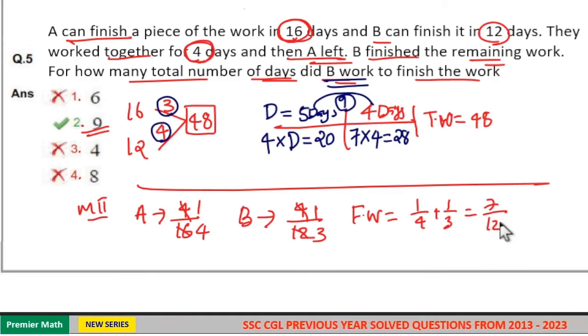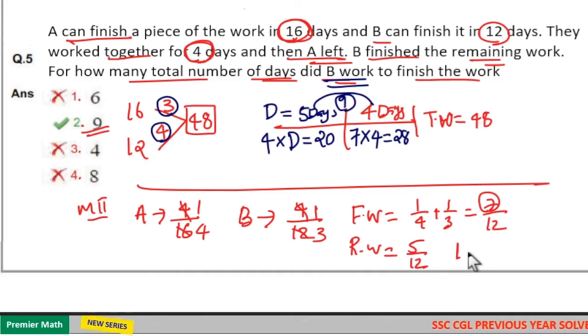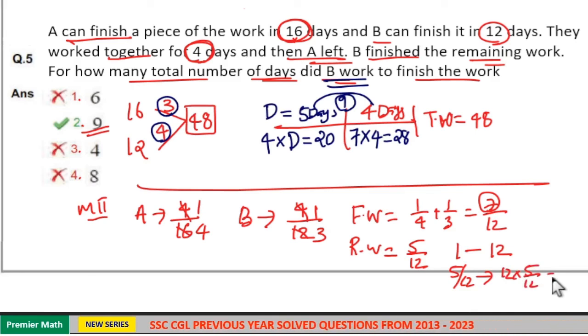That is out of this 12 unit work 7 units is finished. Remaining work equals 5 by 12. So B can complete 1 unit of work in 12 days. Then 5 by 12 unit of work in 12 into 5 by 12 that is 5 days. In 5 days B can complete the remaining work. So total number of days he worked equals 5 plus 4, 9 days.